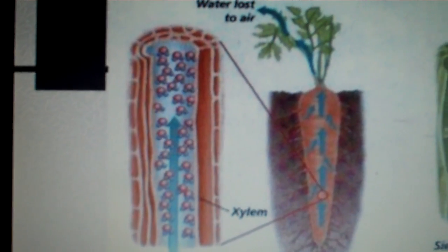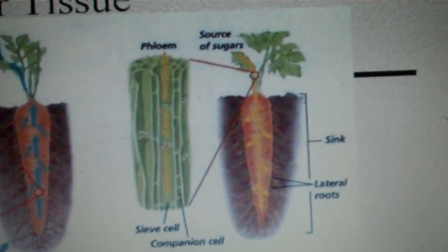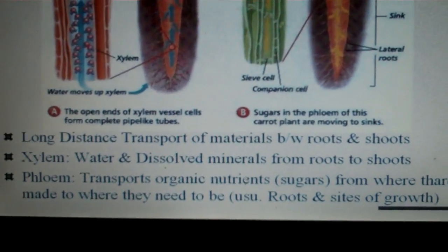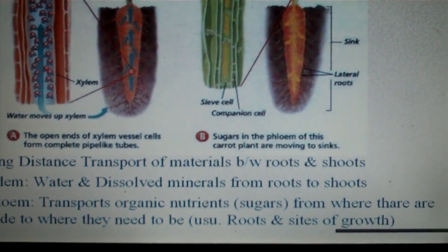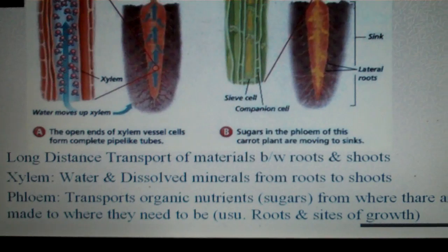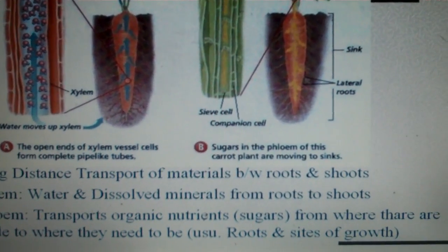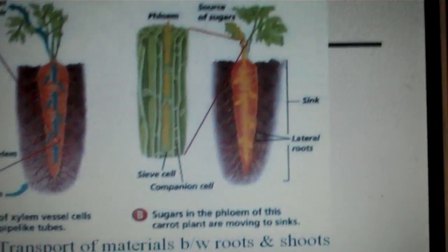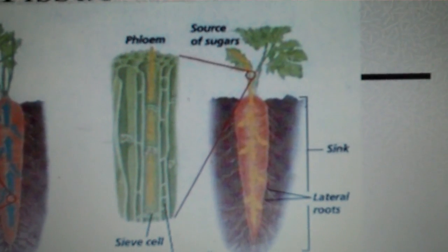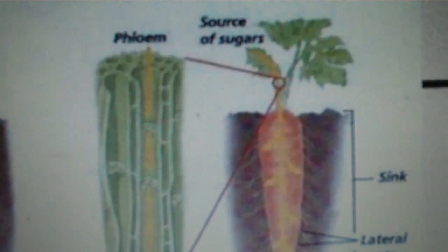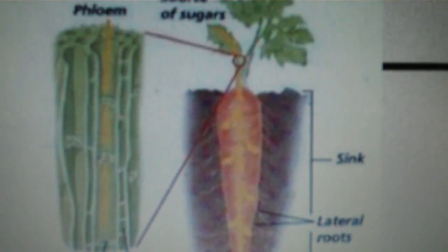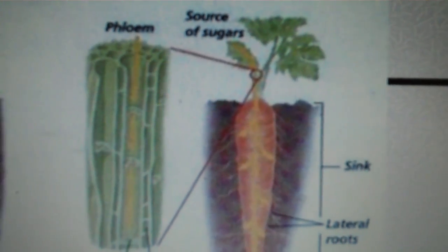So xylem is the transportation of mainly water, and then we have phloem which is transporting organic nutrients or sugars from where they are made to where they are needed. Usually in roots and sites of growth, maybe like fruits or flowers. And so the phloem is going to move sugars, basically, or sap.